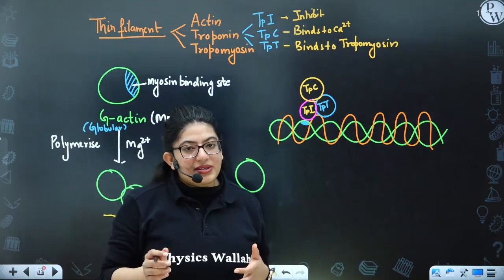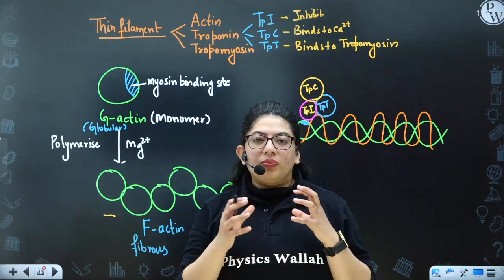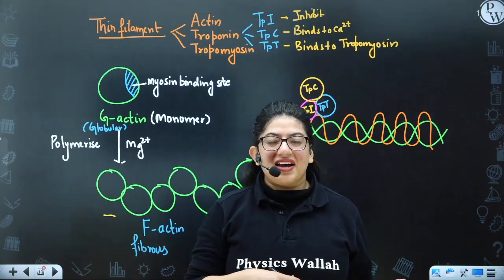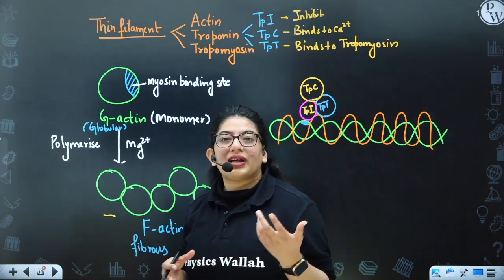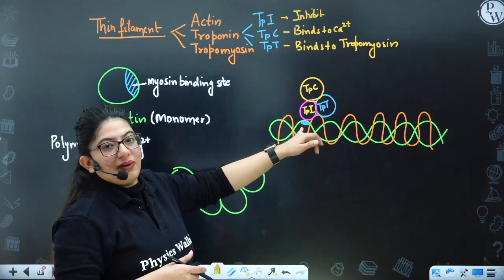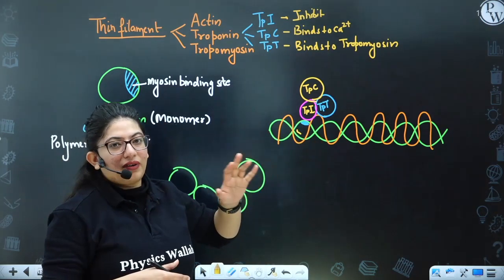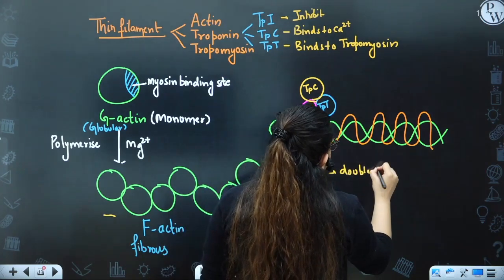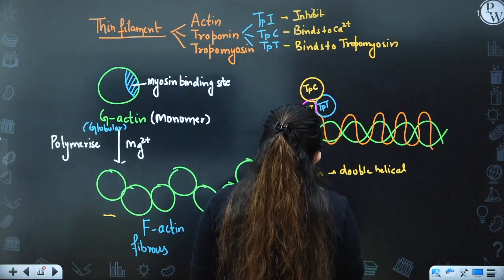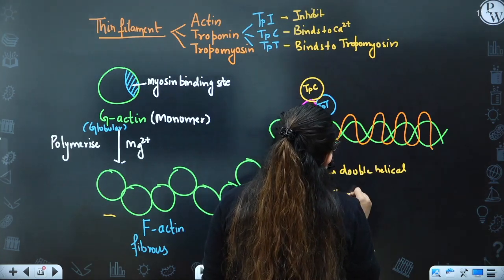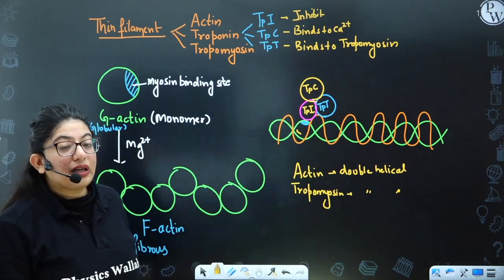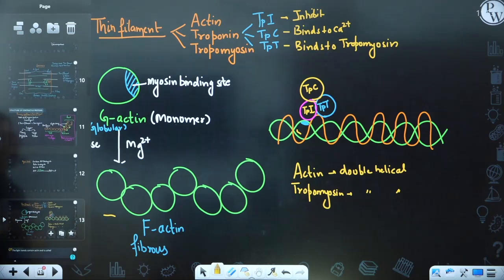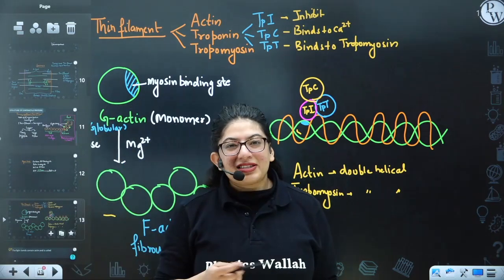The thin filament structure: actin is double helical, tropomyosin is also double helical. Troponin I inhibits the union of myosin and actin by masking the myosin binding site on actin. Both actin and myosin have binding sites for each other — actin's heart has a myosin binding site and myosin's head has an actin binding site — but troponin I blocks this union in the resting state.